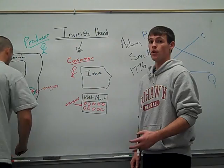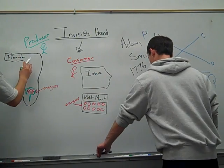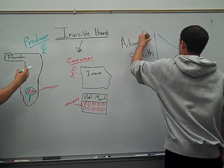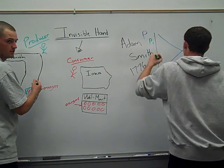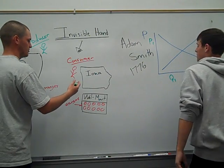Here in our example, orange producers in Florida want to produce and deliver their product in the most efficient manner to consumers in Iowa.